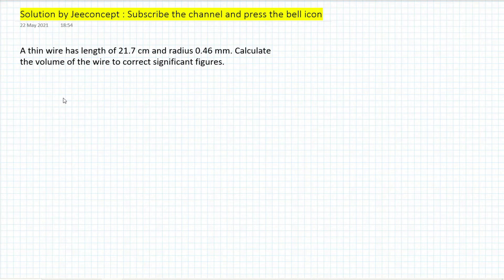Hello friends, in this problem, a thin wire has a length of 21.7 cm and radius 0.46 mm. Calculate the volume of the wire to correct significant figures.